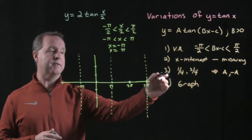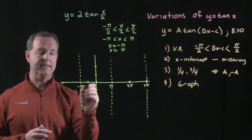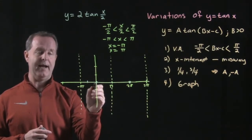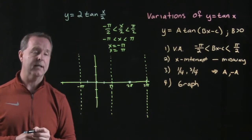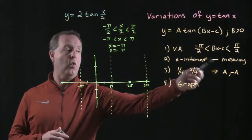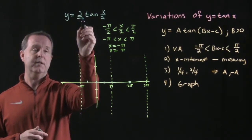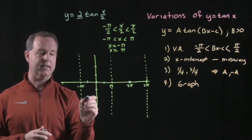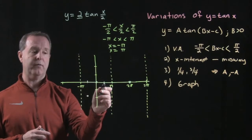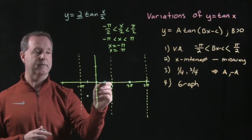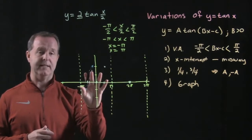Then we look for some specific values: one-fourth and three-quarters of the way from one asymptote to the other — the midway points of the midways. Those values become either the amplitude or the negative of the amplitude. So here, one-fourth of the way, my amplitude is 2, and this one is down at negative 2 because of the traditional graph shape. Then three-quarters of the way, I know the value there is a positive 2, which we'll put up here.